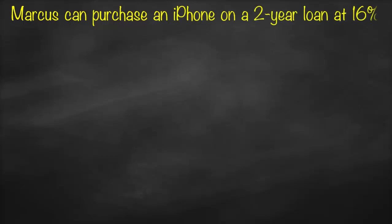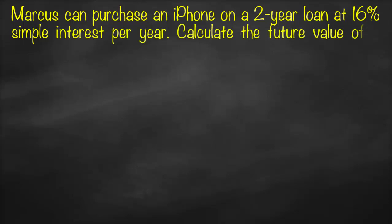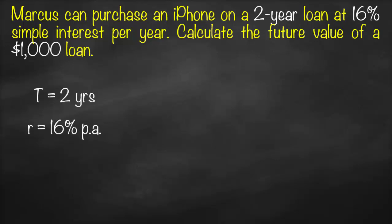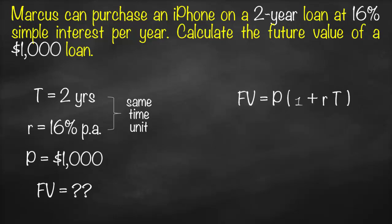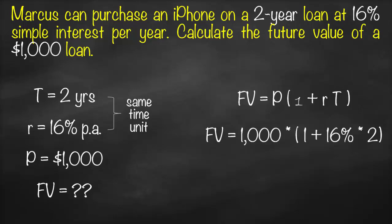Let's apply some examples of each formula. Marcus can purchase an iPhone on a two-year loan at 16% simple interest per year. Calculate the future value of a $1,000 loan. We have time equal to 2 years, simple interest equal to 16% per annum, and a principal of $1,000. Remember, our time and interest must have the same time unit. Here time is in years and interest is annual, so no adjustment is needed. Future value equals $1,000 multiplied by open bracket one plus 16% times two, giving a future value of $1,320.